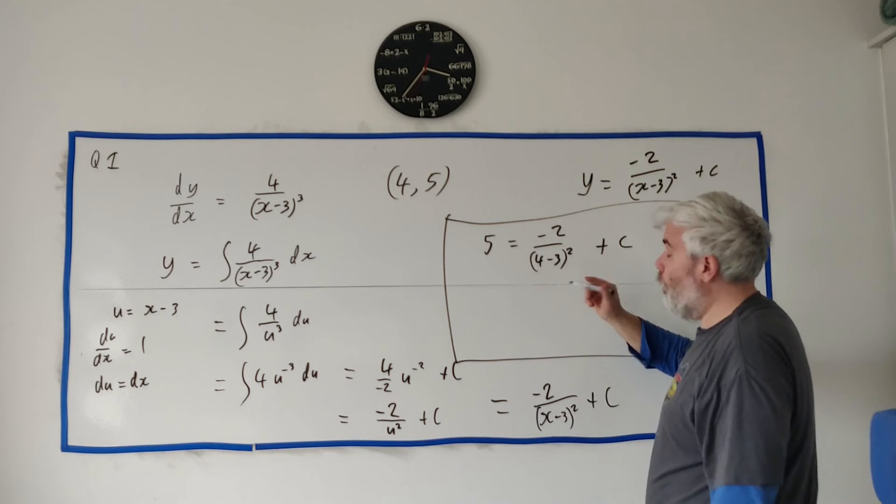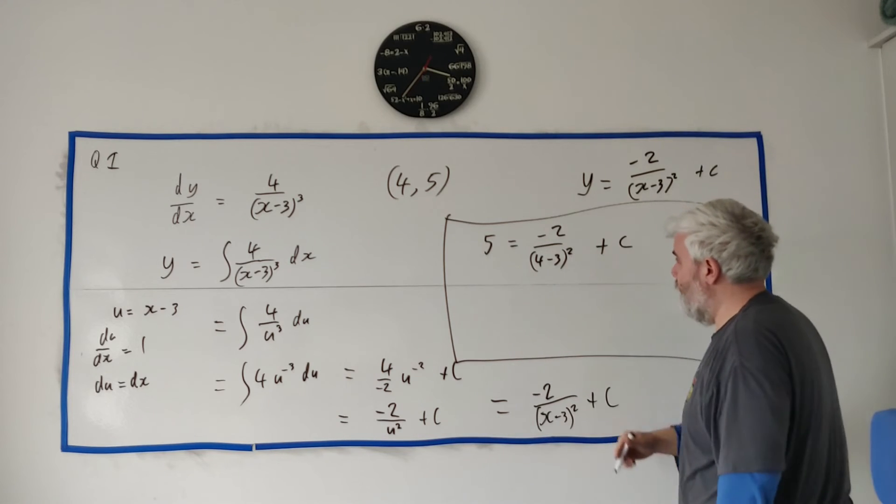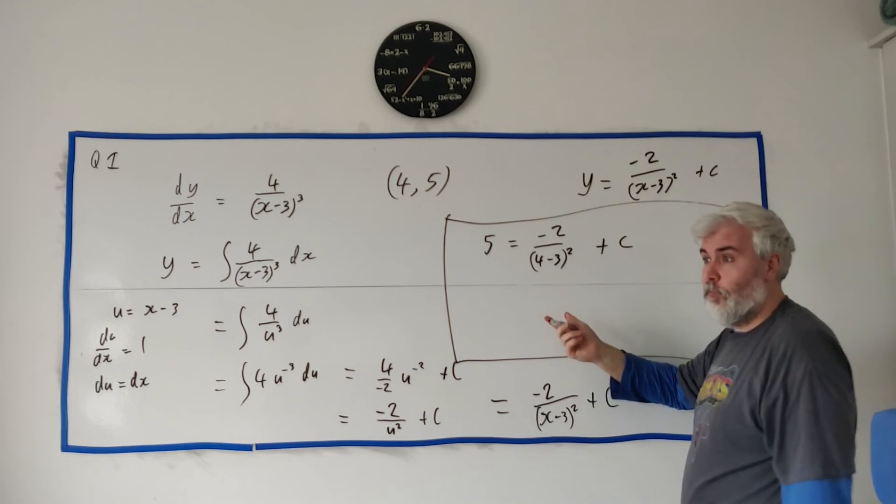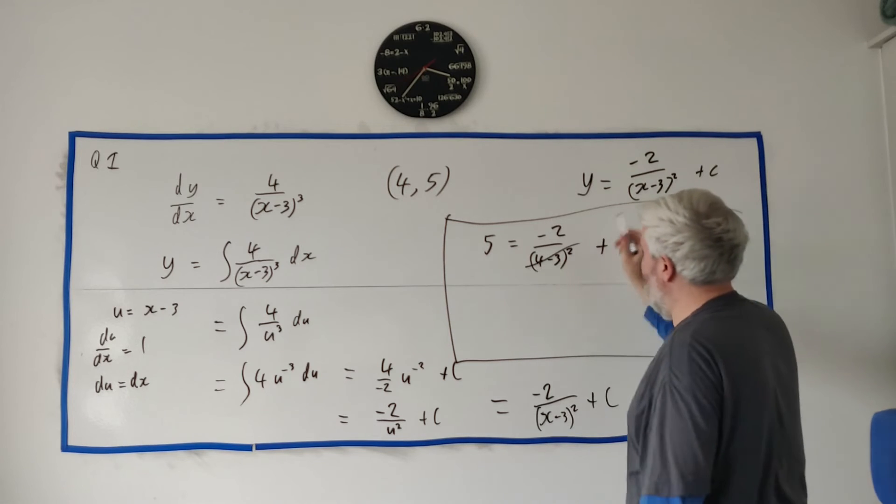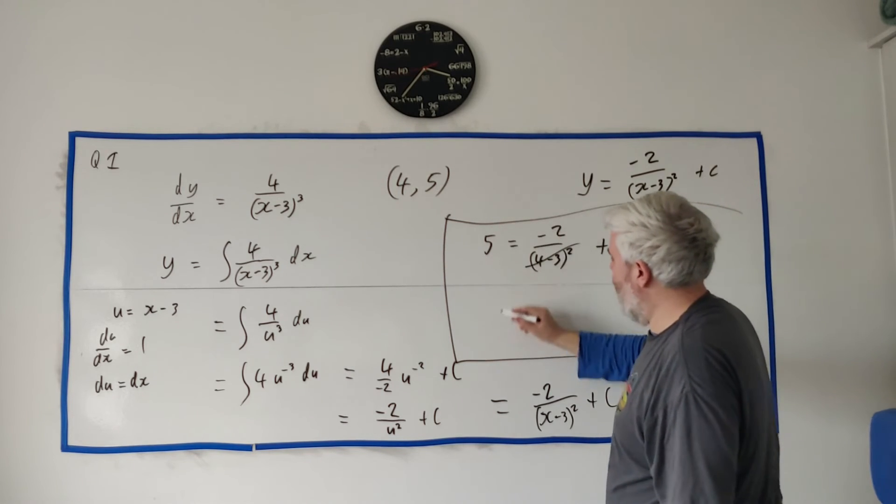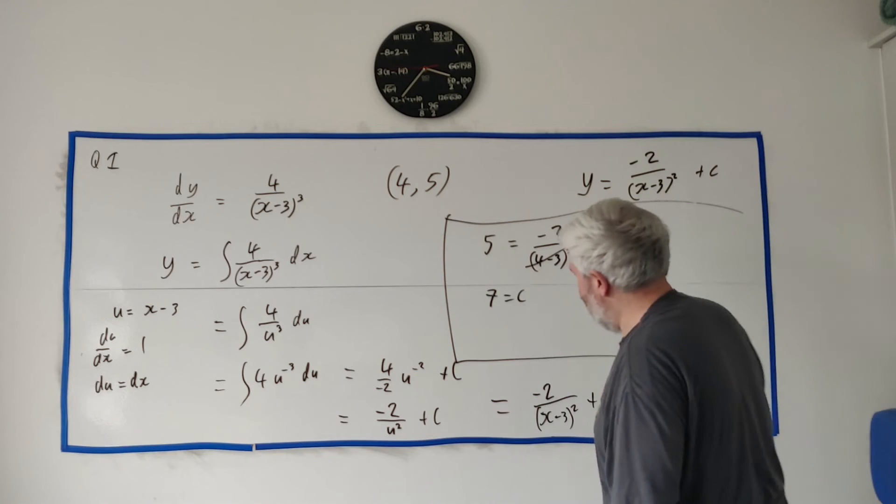This equation, we know everything but c. 4 minus 3 is 1. 1 squared is 1. Minus 2 divided by 1 is just minus 2. Basically, this all disappears. Add 2 to both sides. We get 7 is equal to c.